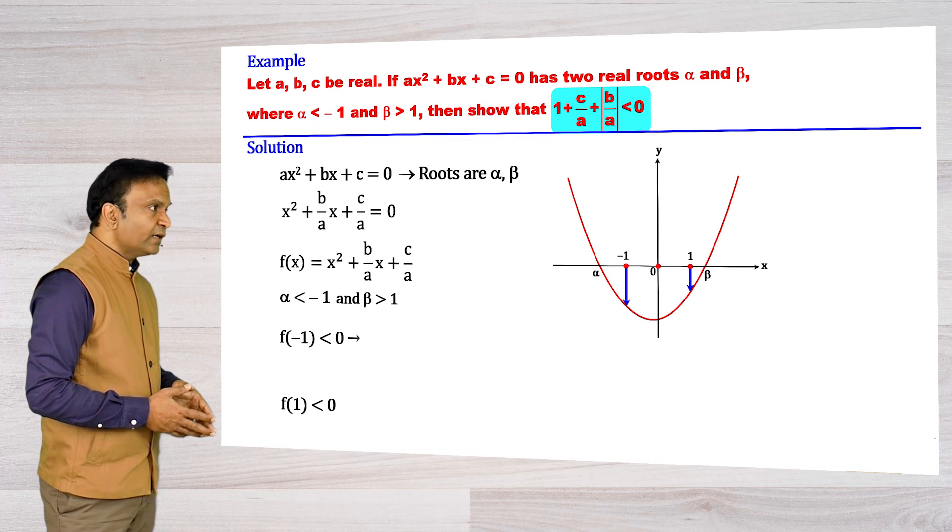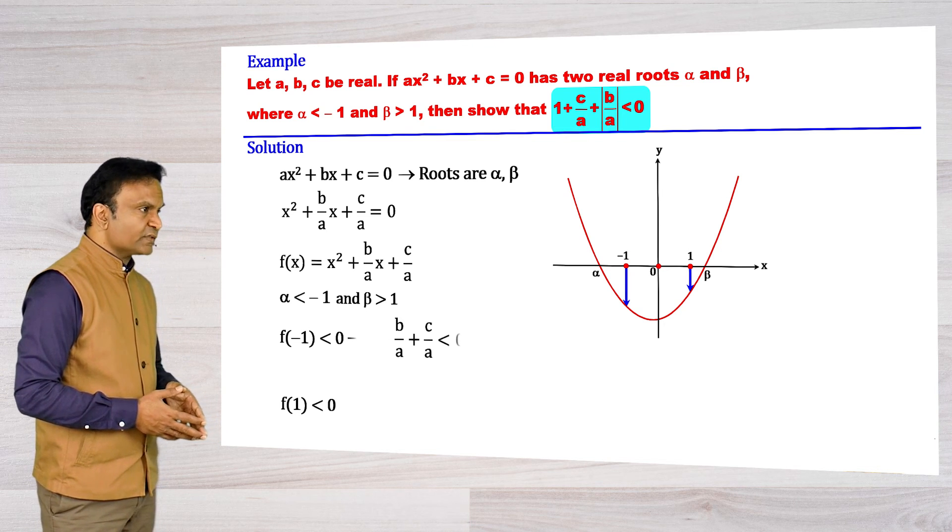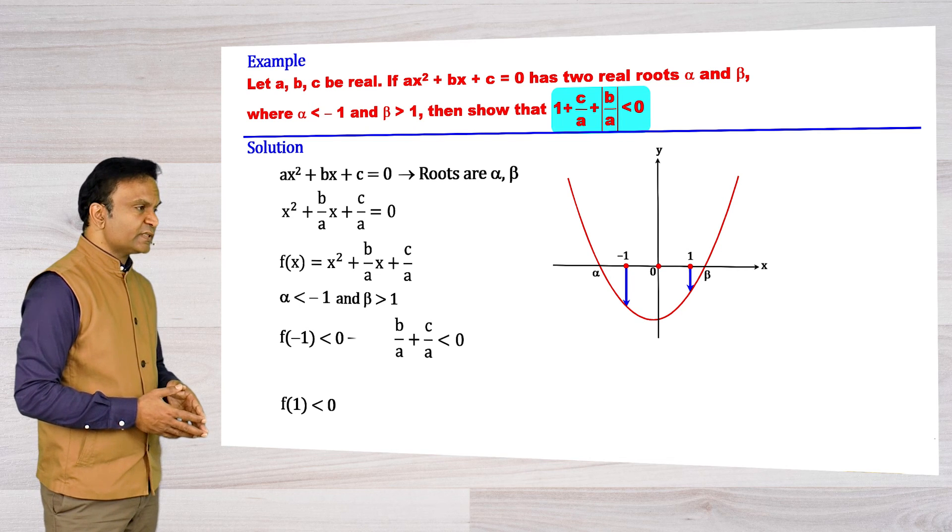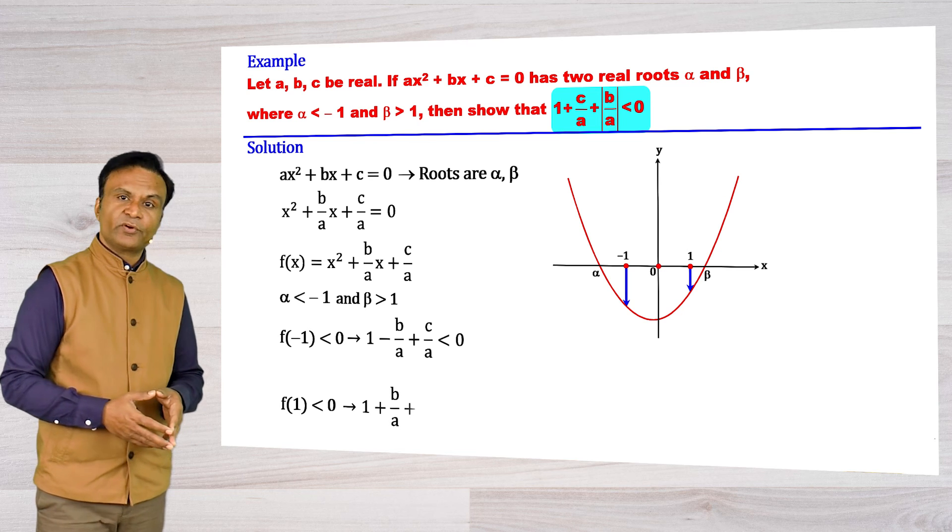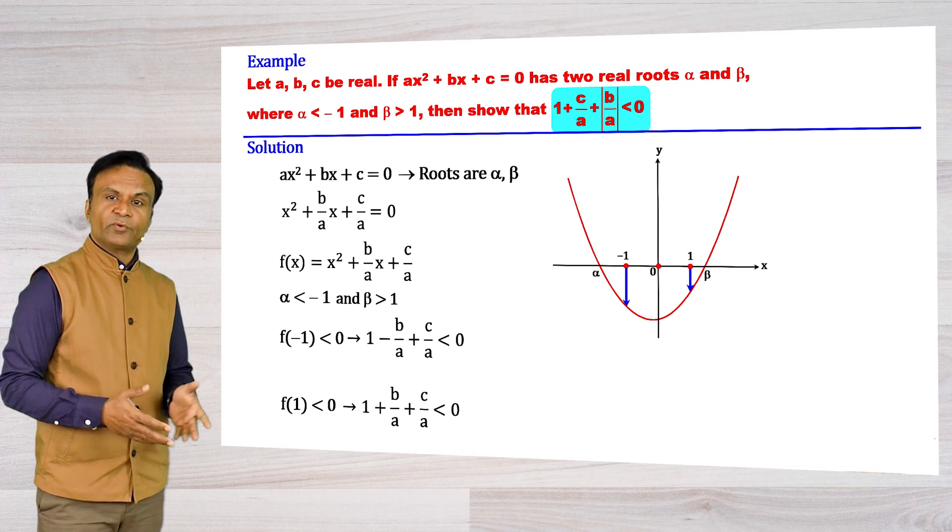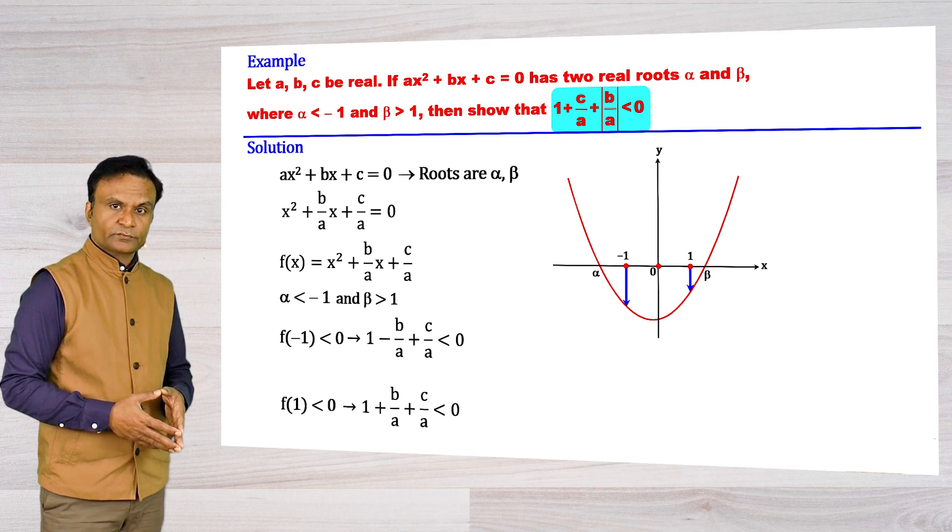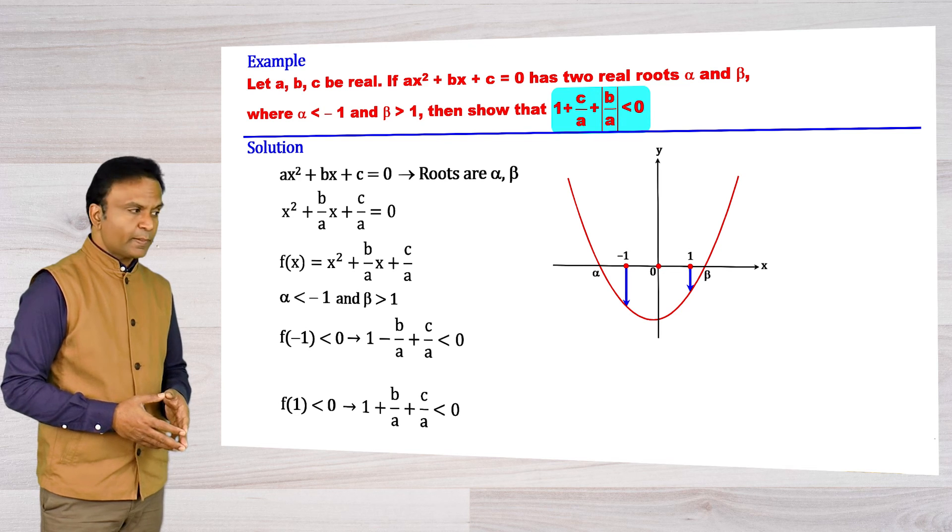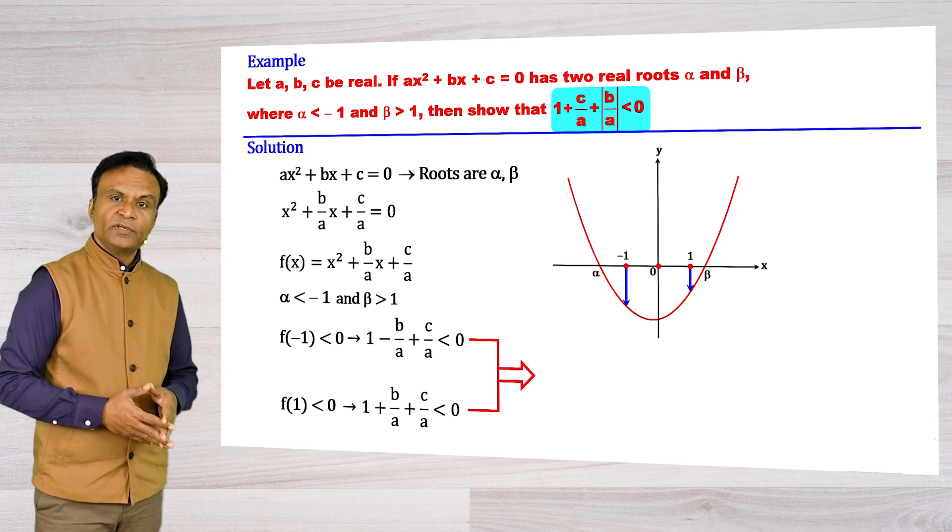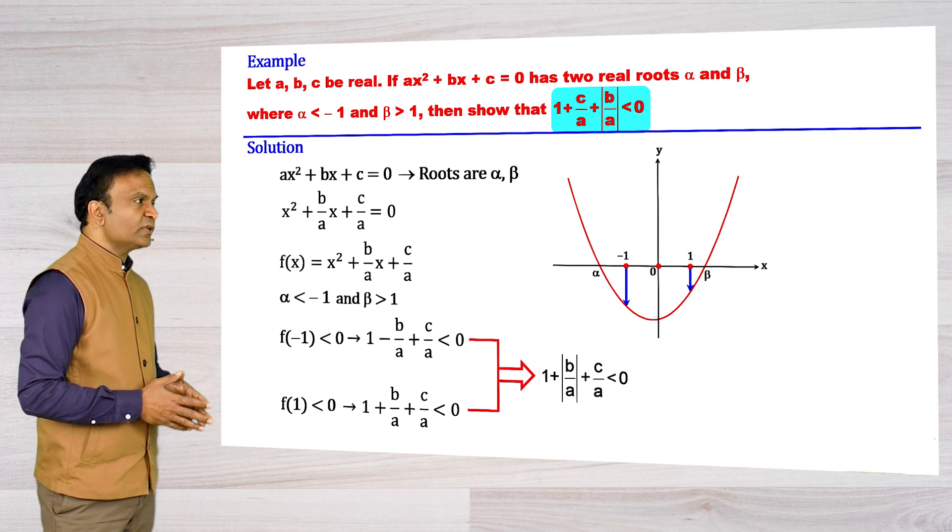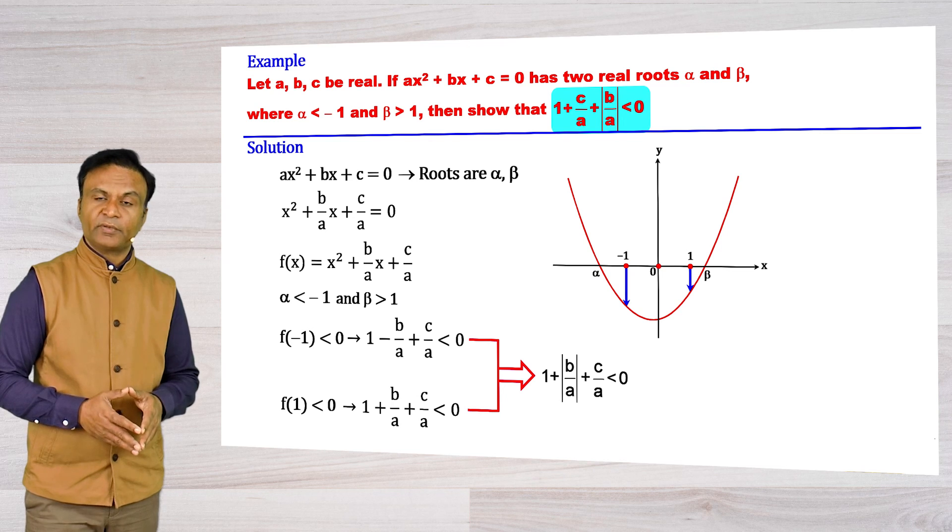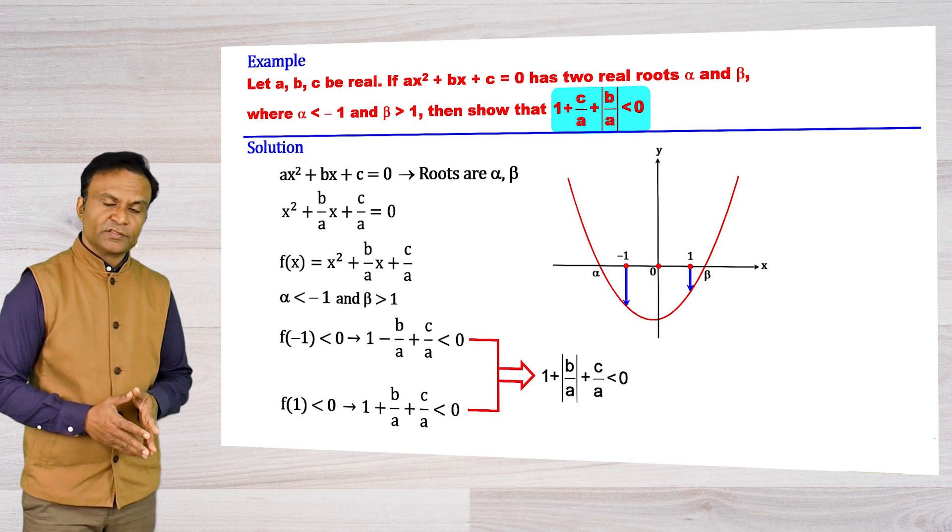We have 1 - b/a + c/a less than 0, and 1 + b/a + c/a less than 0. Now, if we combine these two conditions, we get one condition: 1 + |b/a| + c/a less than 0.